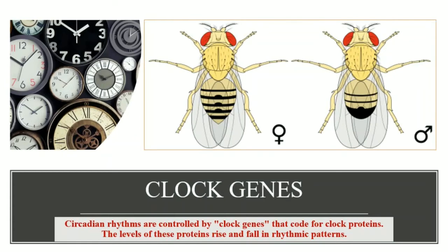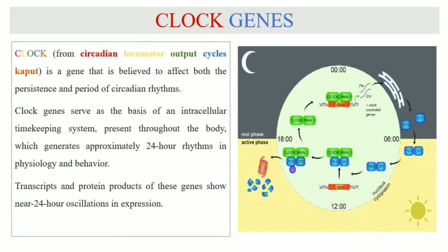The word CLOCK basically means circadian locomotor output cycles output, and this is a gene that is believed to affect the persistence, meaning the duration, and the period, the timing of circadian rhythms.